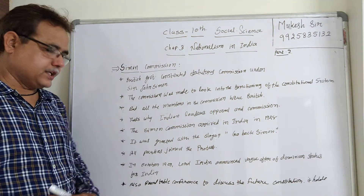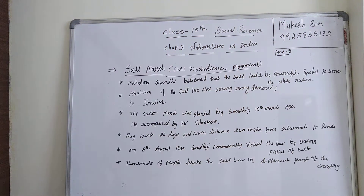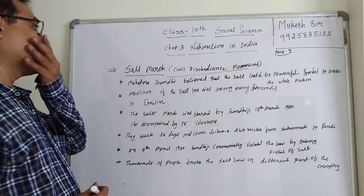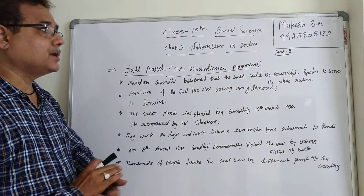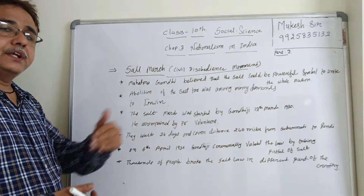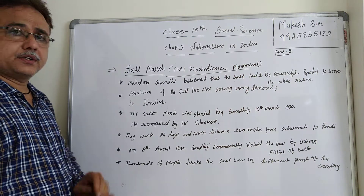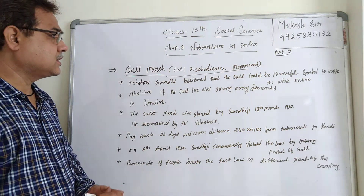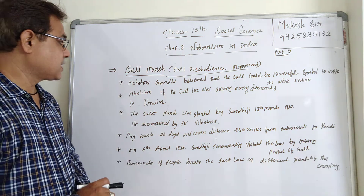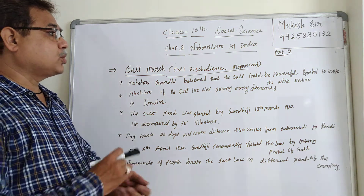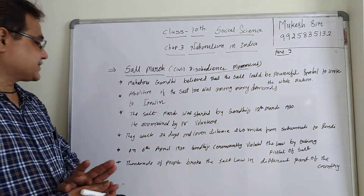Next point: Salt March and Civil Disobedience Movement. Mahatma Gandhi believed that salt could be a powerful symbol to unite the nation. The abolition of the Salt Tax was among many demands. Gandhi ji felt Salt Satyagraha was the best way to unite the whole nation.